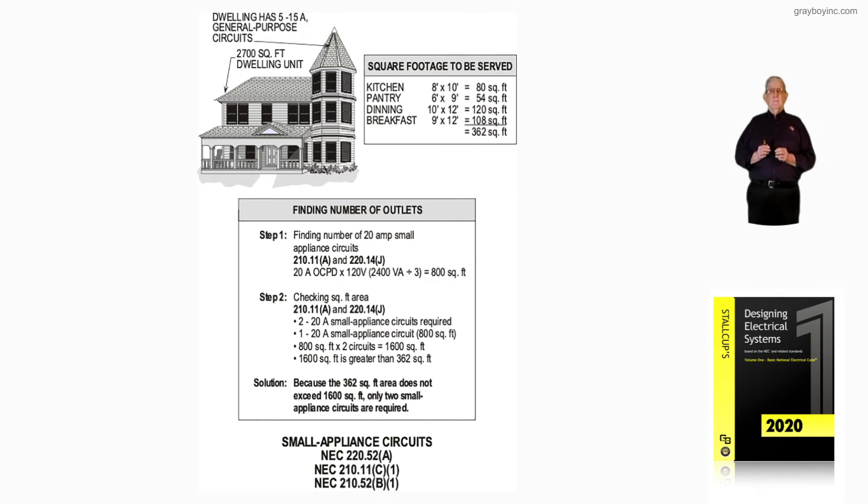The dining room area is 120 square foot, and the breakfast room area is 108 square foot, with a total of 362 square foot, in the rooms where the small appliance circuits are permitted to serve outlets.